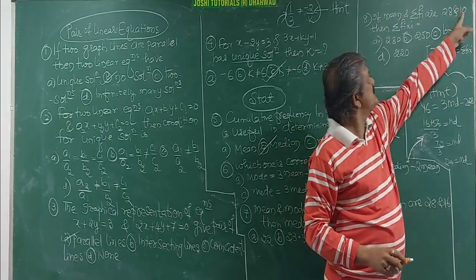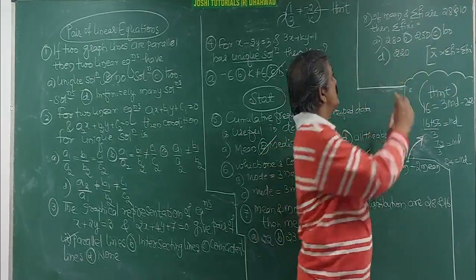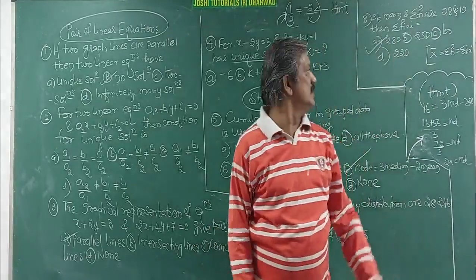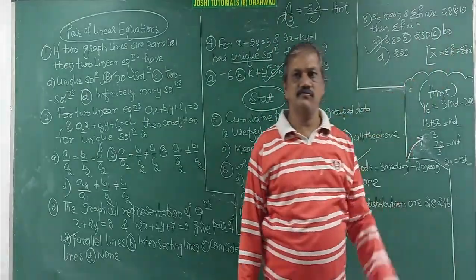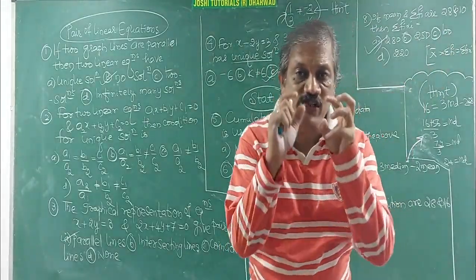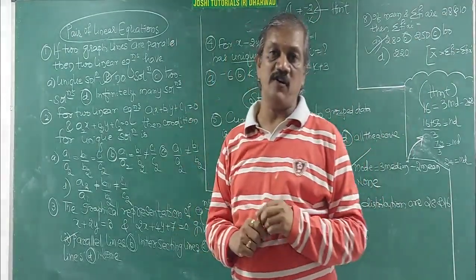Multiply, X bar is here 28, Fi is here 10s are 280. That's all. K is the answer. This is the hint.